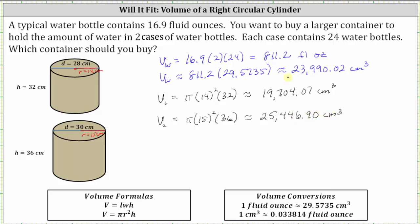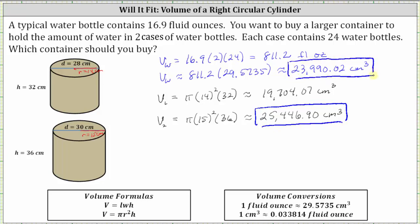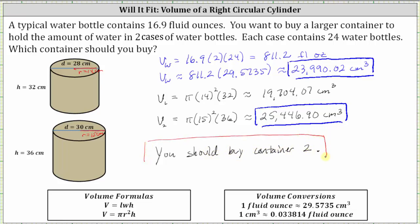Comparing the volumes, the volume of the second container is greater than the volume of the water, and therefore the container is large enough to hold all of the water, which means you should buy container two. I hope you found this helpful.